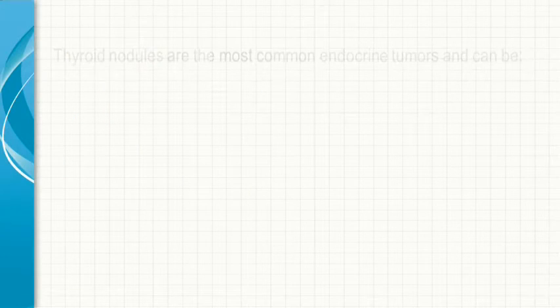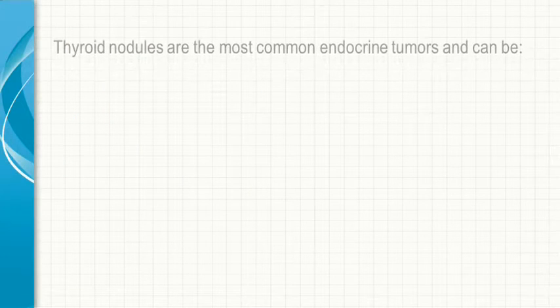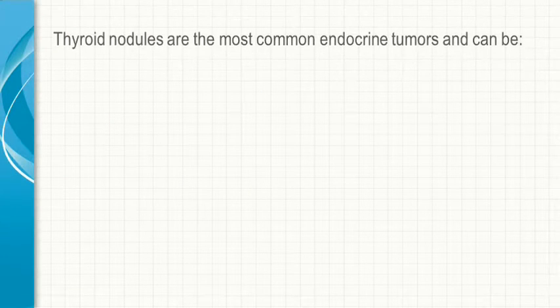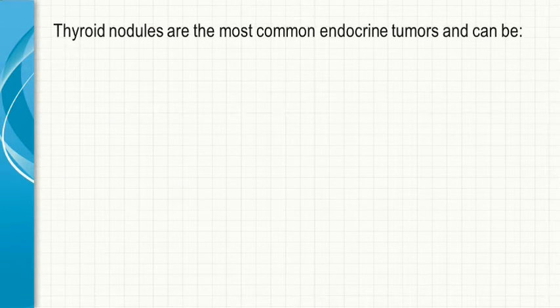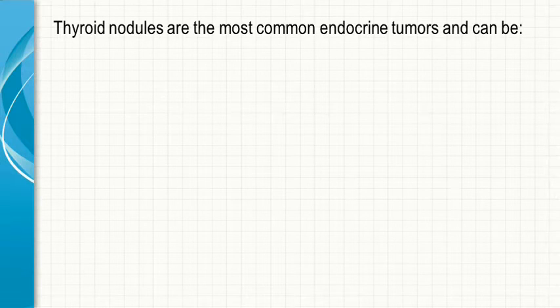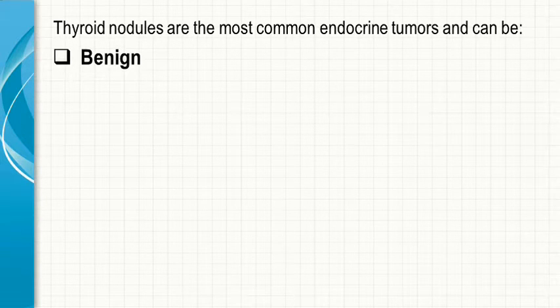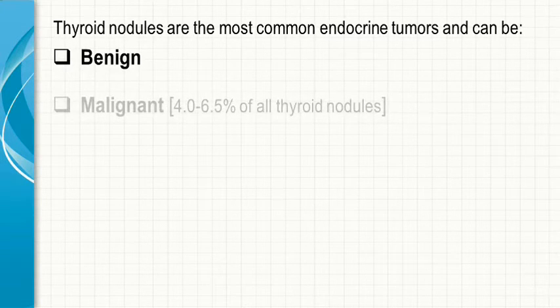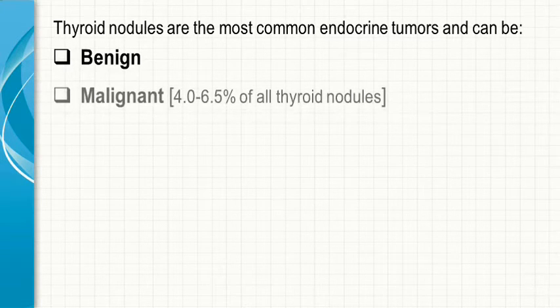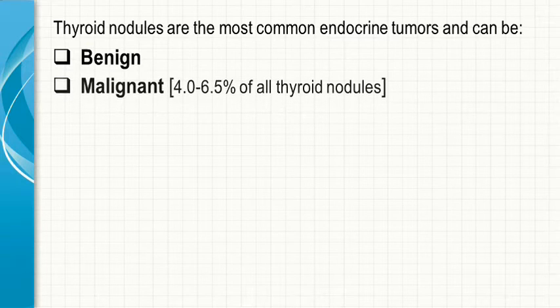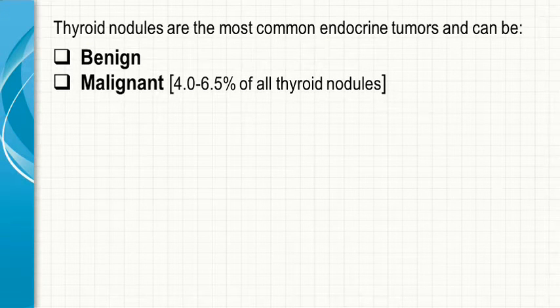Thyroid nodules are the most common endocrine tumors and can be classified into benign or malignant, which comprise 4 to 6.5% of all thyroid nodules.